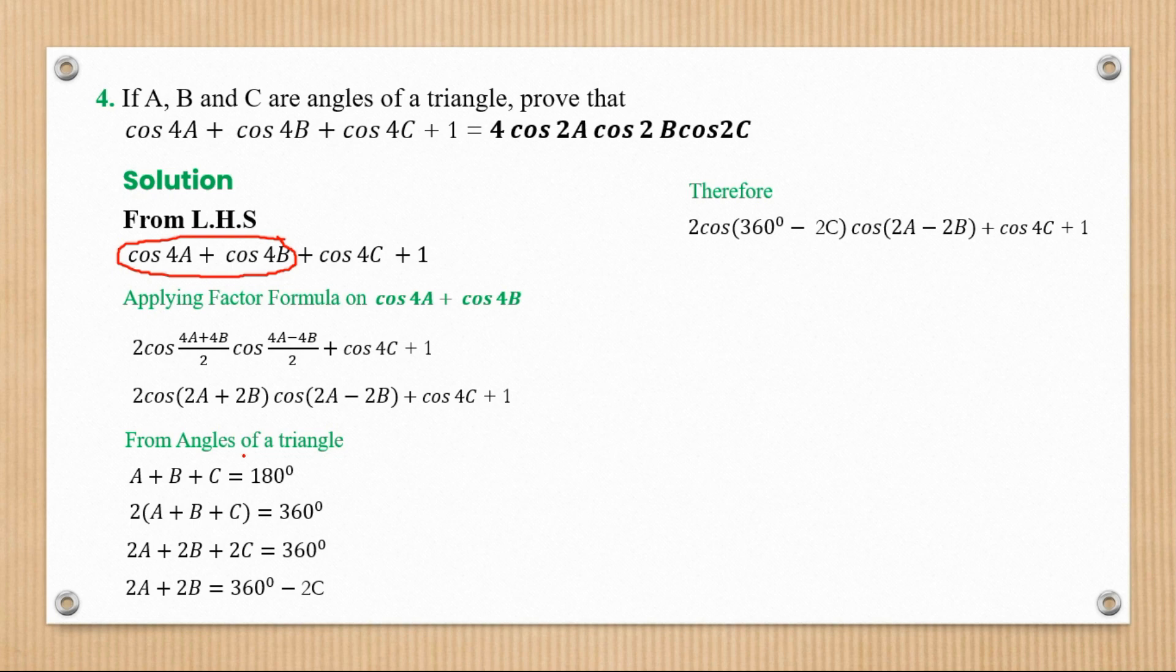When you substitute that into the equation, we have that. Applying rules of compound angles, we end up with that. But cos of 360 is positive 1, while sin of 360 is 0. So this disappears and remains with a positive 1. This becomes 2 cos 2C.